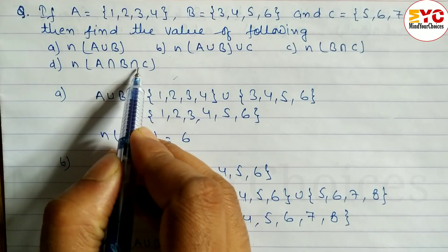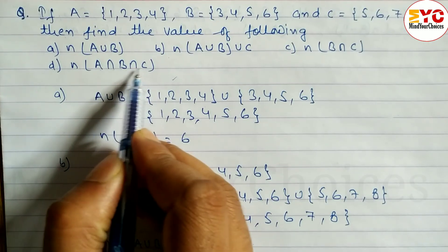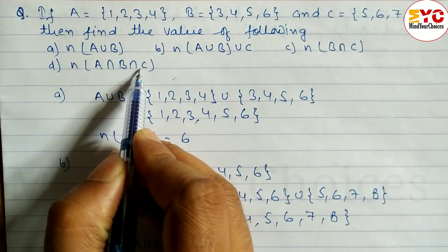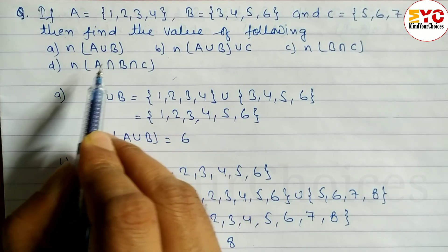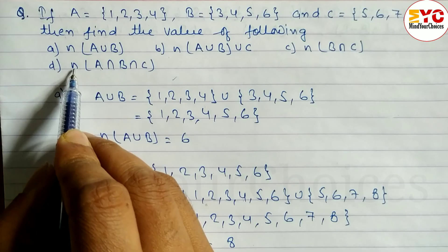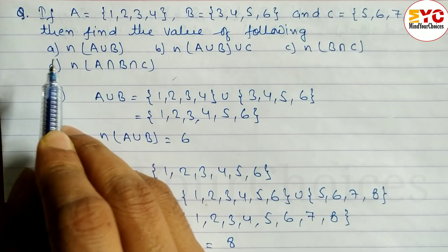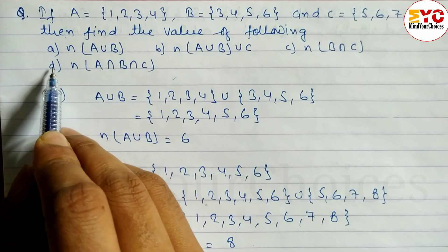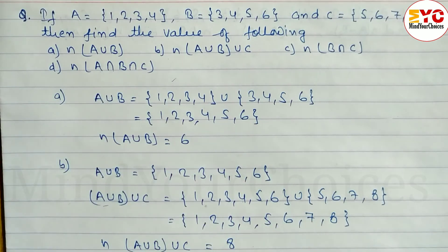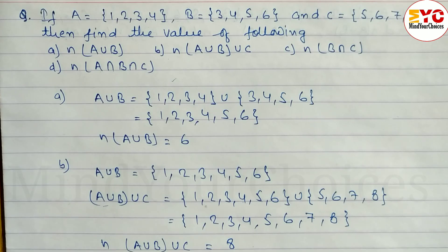Find the common elements, then find how many numbers are there — find the cardinal number of that. Please comment your answer. If you like this video, please like. For new videos please subscribe and don't forget to share with your friends. Thanks for watching till the end — keep supporting and keep sharing.